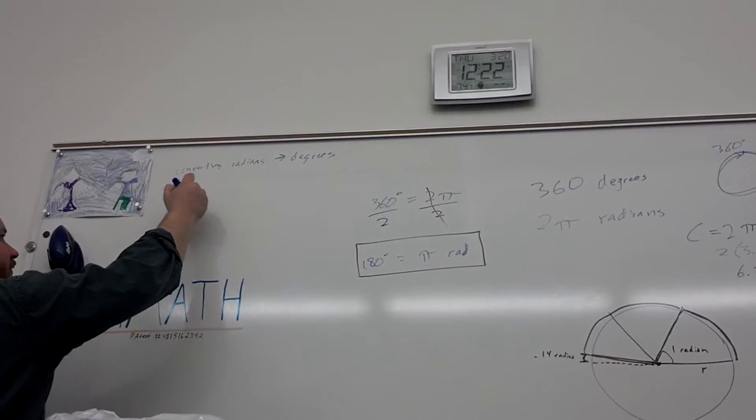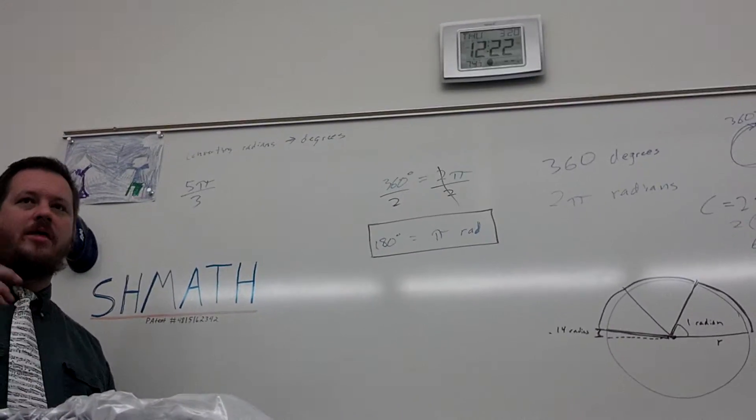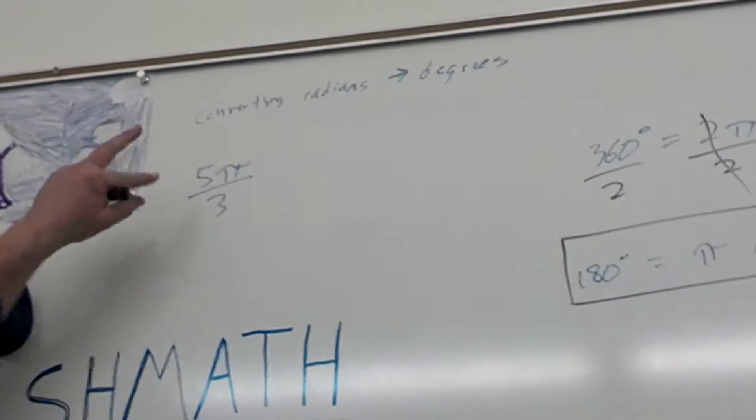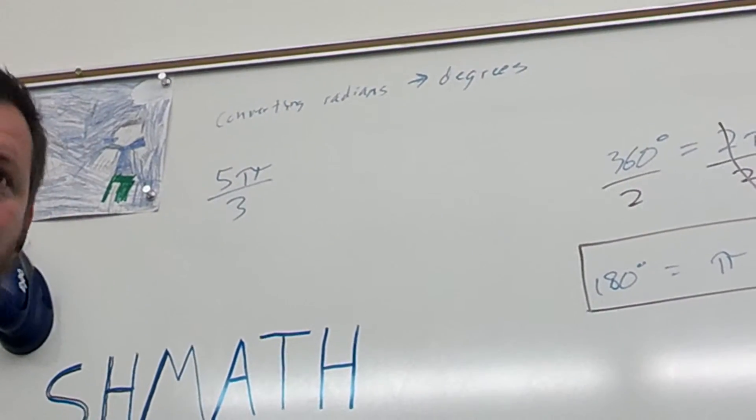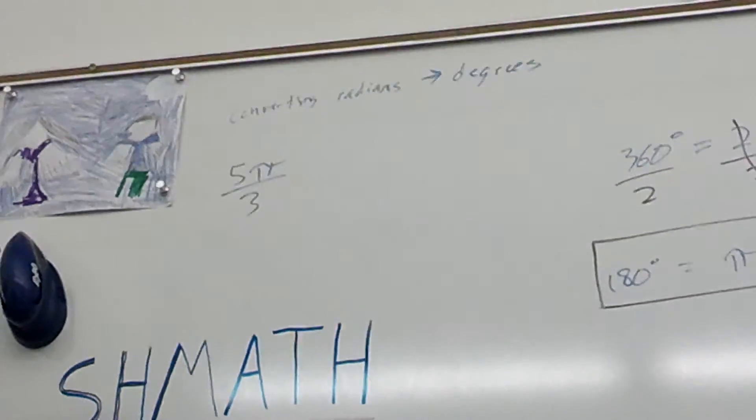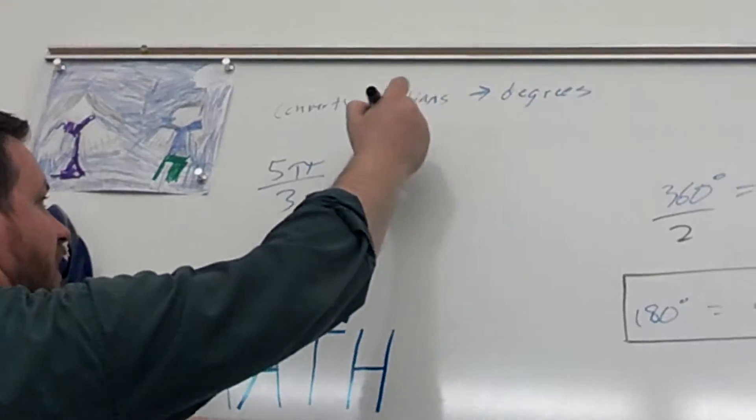Let's say we have an angle of 5 pi over 3 radians. One of the other things to get used to is that we usually use fractions with pi to talk about a certain number of radians. You'll see why in a second.